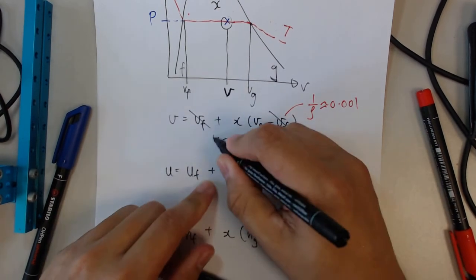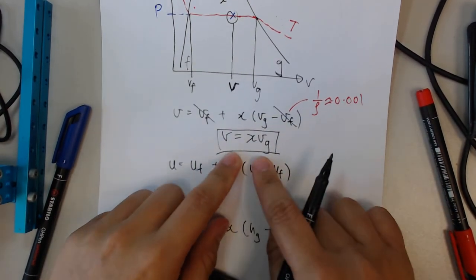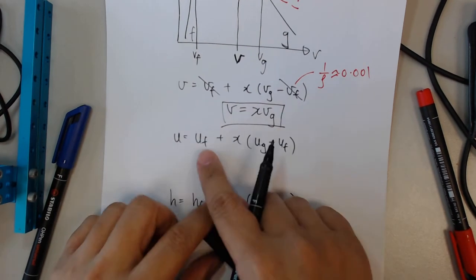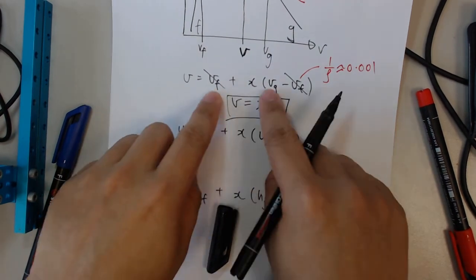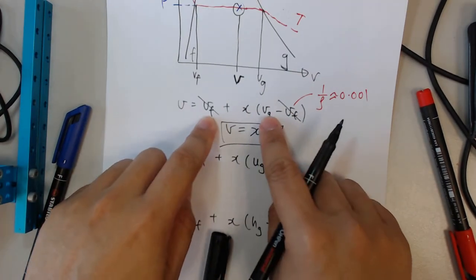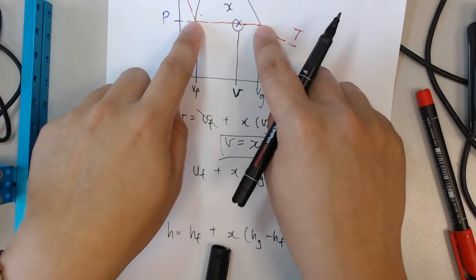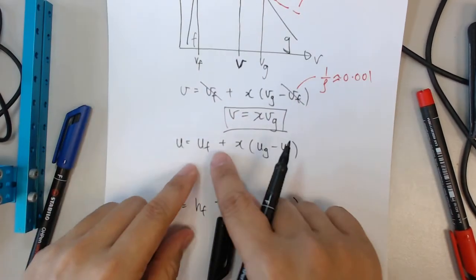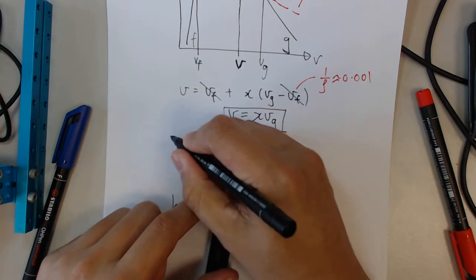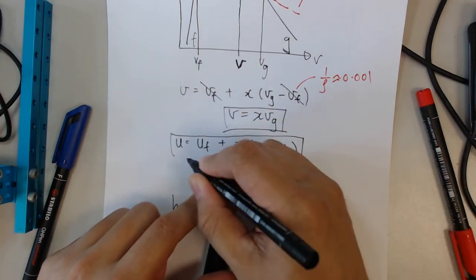Okay, so this is the dryness fraction equation when you want to find specific volume. For Uf, it carries the same spirit of the kind of interpolation within these two sets of internal energies. So you're going to use the same form, and this will be the equation.